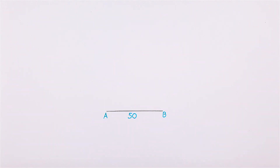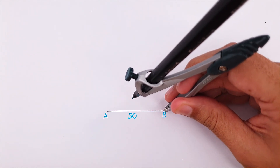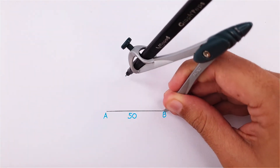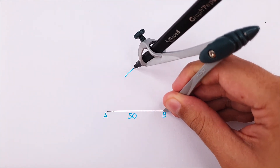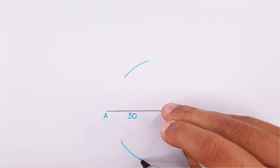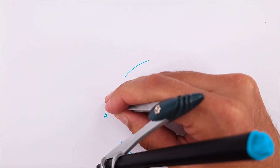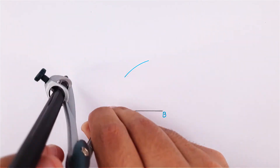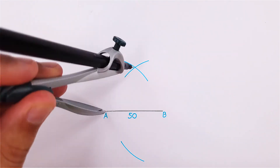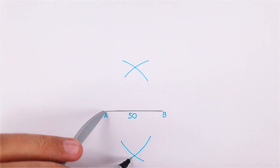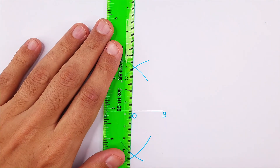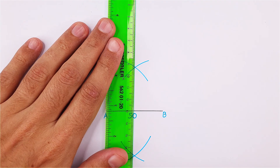First, we need to construct a perpendicular bisector. Place your compass on point B and adjust it to more than half the length of the side. Draw an arc above and below side AB. Using the same measurement, do the same on point A. Draw a line through the intersecting points and label your midpoint.